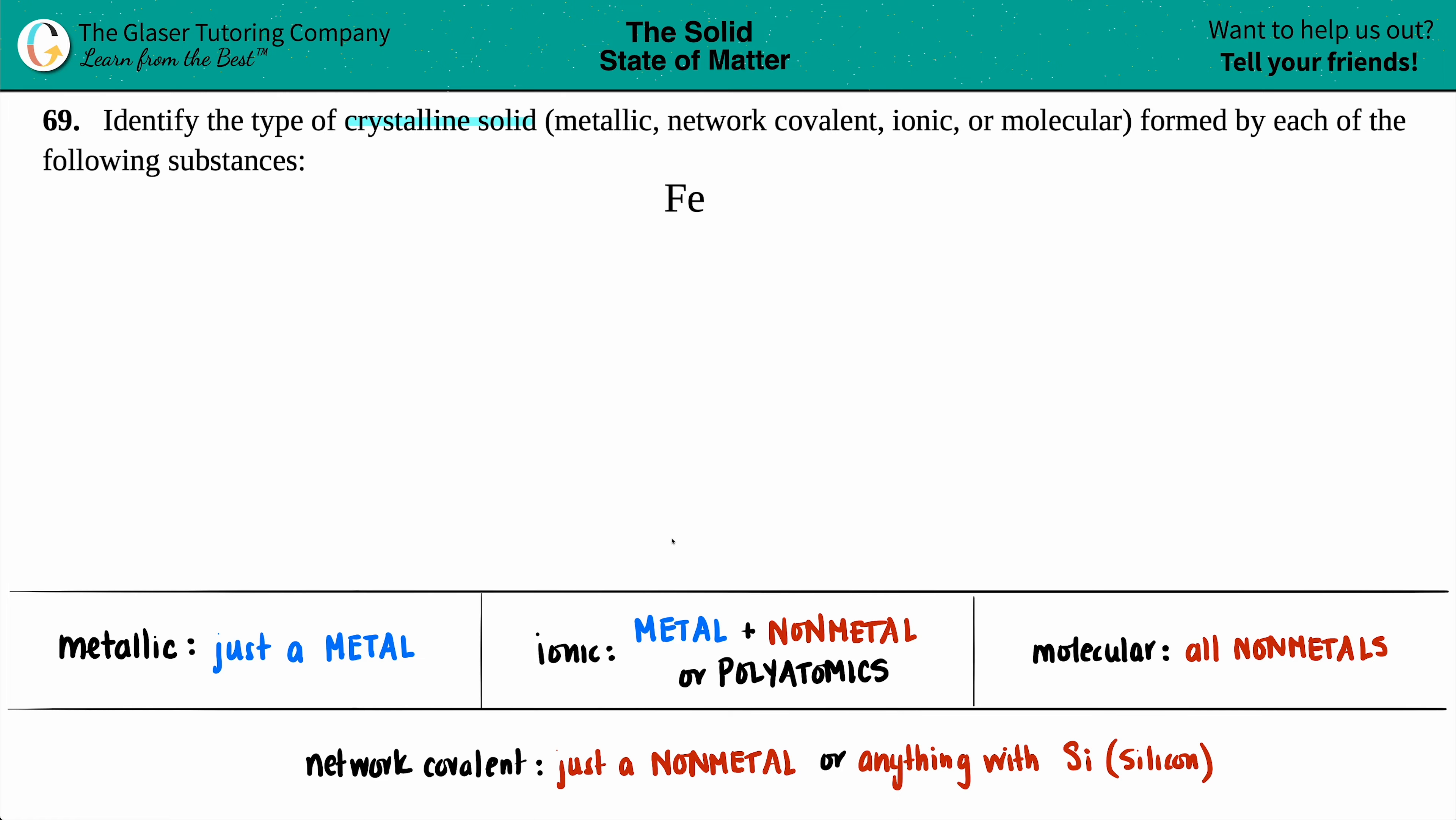So let's just work from left to right to figure out which crystalline solid is iron. Is it a metallic crystalline solid? Well the word metal is in the word metallic, so in order to be a metallic crystalline solid you just have to see a single metal. And voila, iron on the periodic table is a metal.